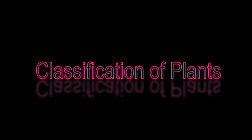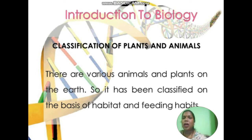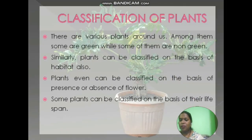Classification is done on the basis of habitats, feeding habits, and lifespan. In this chapter, we will study the classification of plants and animals. There are various animals and plants on the earth, and they have been classified on the basis of their habitat, feeding habits, and lifespan.